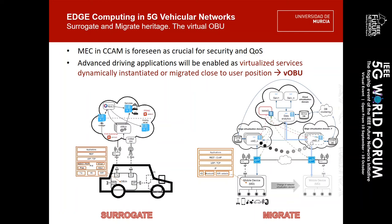Surrogate is the basis where the virtual OBU is presented, not only as a proxy, but also as a caching mechanism and a processing offloading unit. Meanwhile, Migrate relies on Surrogate and solves the migration of virtual OBU services seamlessly, taking advantage of coordinated SDN data forwarding and packet rewriting, to fulfill transparent OBU migration to newly instantiated counterparts.